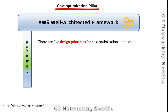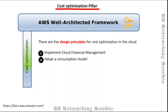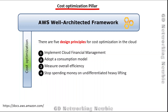There are five design principles for cost optimization in the cloud: first, implement cloud financial management; second, adopt a consumption model; third, measure overall efficiency; fourth, stop spending money on undifferentiated heavy lifting; and fifth, analyze and attribute expenditure.